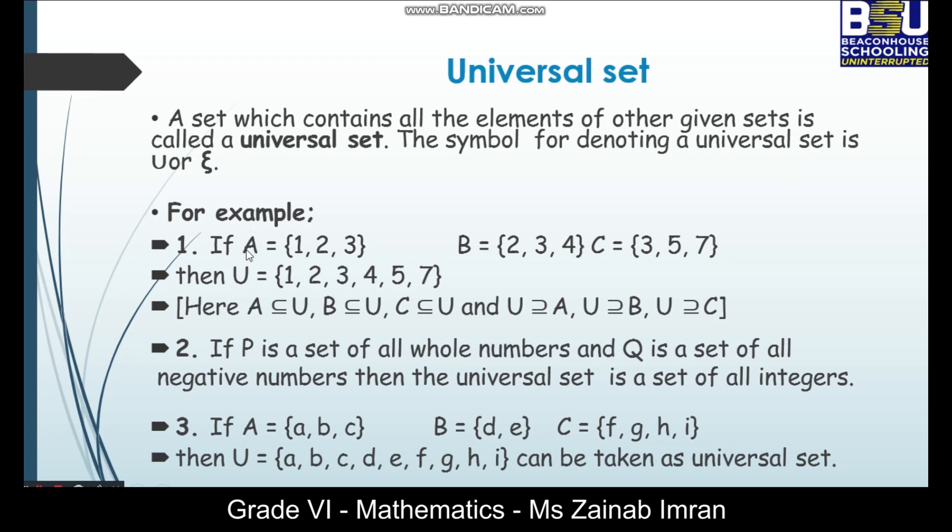For example, if A has elements 1, 2, 3 and B has elements 2, 3, 4, C has elements 3, 5, 7. So what is the universal set?